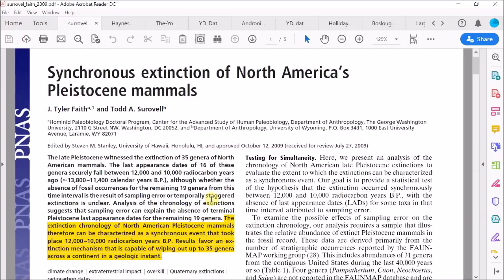There's also this paper, which is not part of our bibliography, by Faith and Surovell, which claims a similar kind of dramatic end to the North American megafauna. In the abstract they claim the extinction chronology of North American Pleistocene mammals can be characterized as a synchronous event that took place at the onset of the Younger Dryas plus or minus about a thousand years.